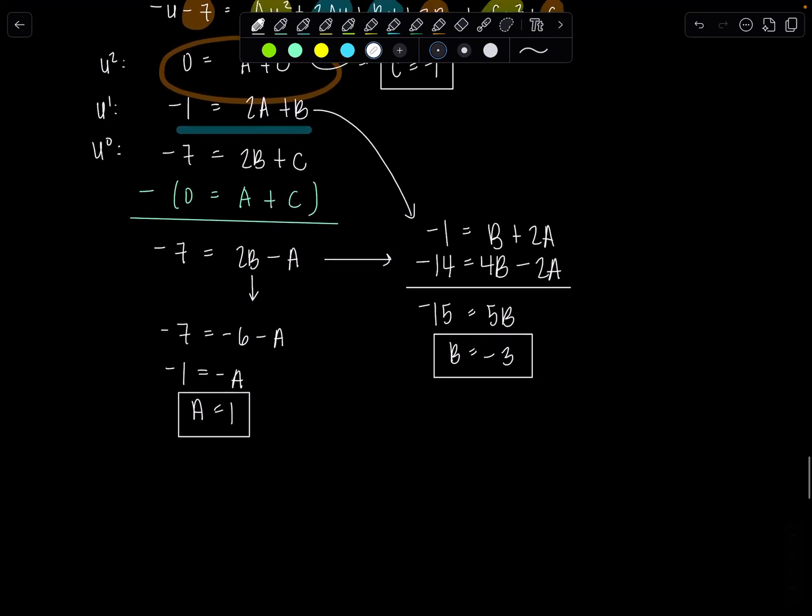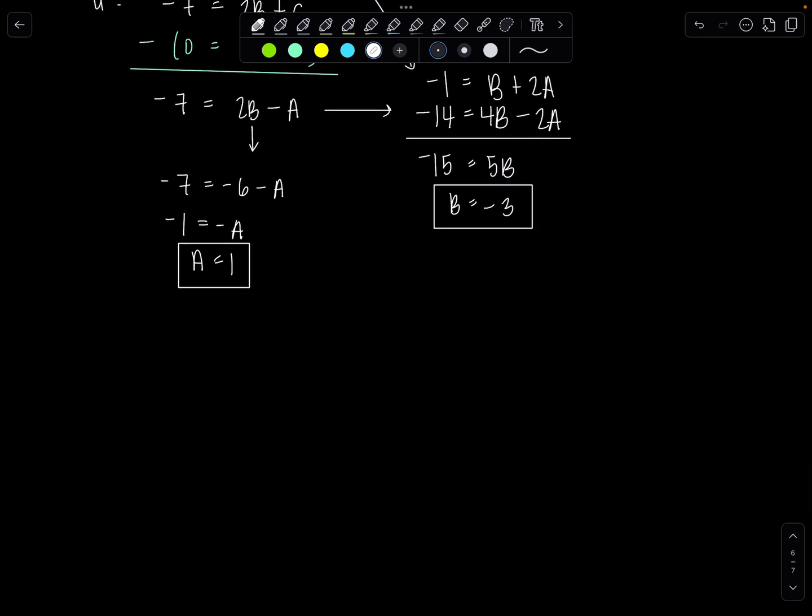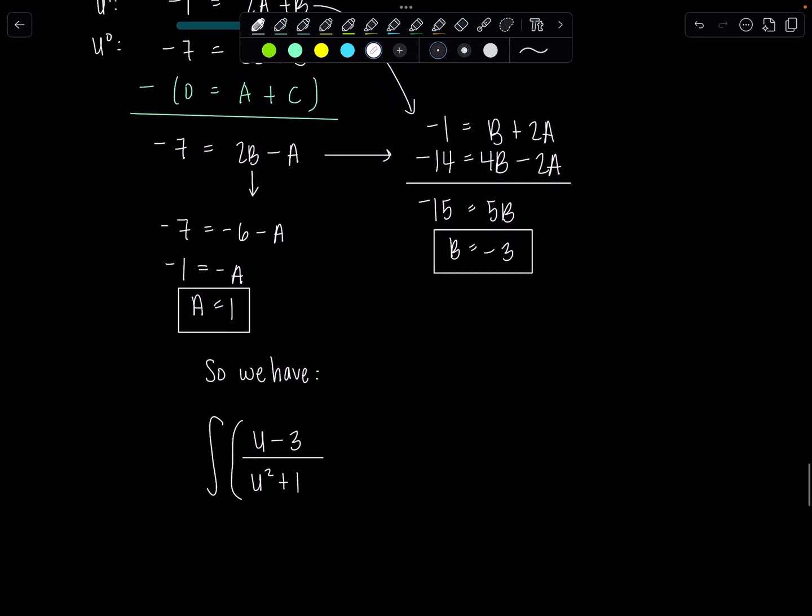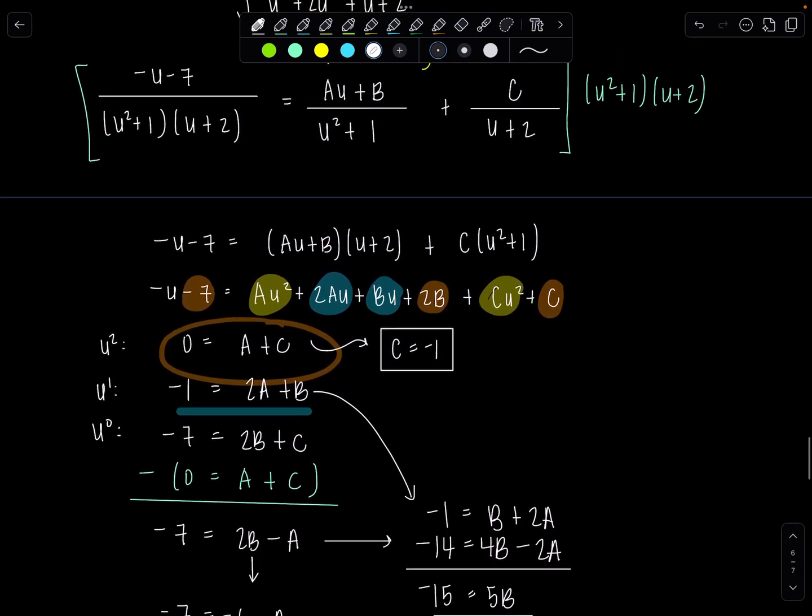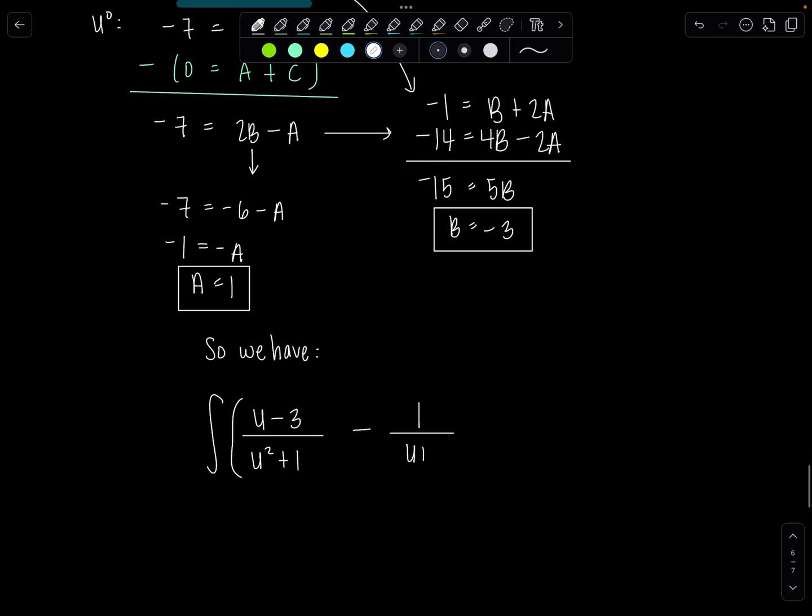Okay so let's put everything together back to our integral. So we have the following. Integral of a u so 1u plus b which is negative 3 over u squared plus 1 plus c which is negative 1 over u plus 2 du. Okay very good.